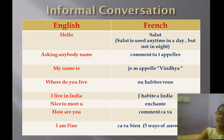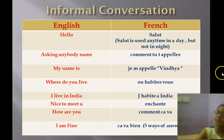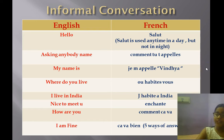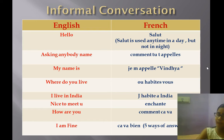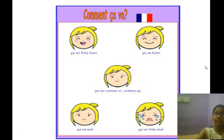For asking 'how are you,' we have to say comment ça va. I repeat, comment ça va. For answering it — 'I am fine' — we have to say ça va bien. I repeat, ça va bien. It has five ways for answering.